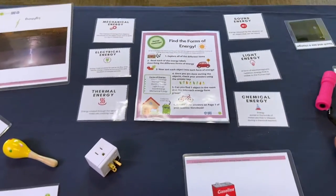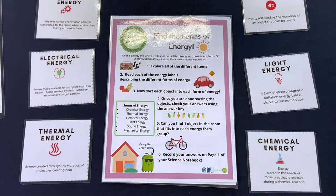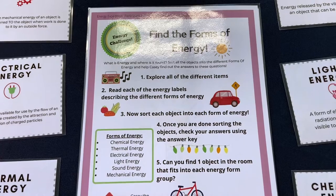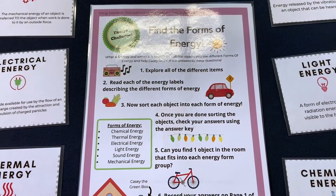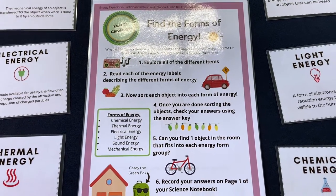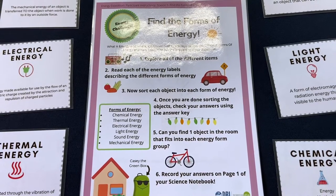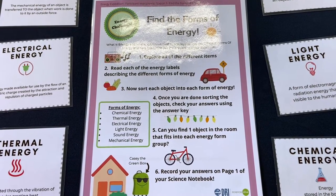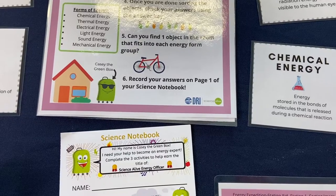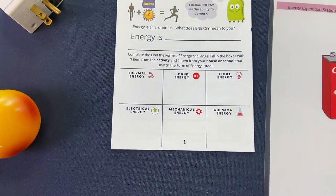Now let's take a closer look at the actual activity's instruction sheet. For finding forms of energy, step one: explore all the different items, read each of the energy labels describing the different forms of energy, and then sort each object into each of the forms of energy. Once you are done sorting the objects, check your answers using the answer key. Your last step will be to record these answers on page one of your science notebook.